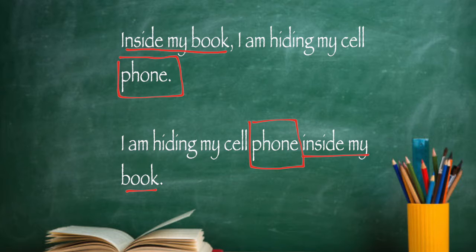A misplaced modifier is when you have a descriptive word or phrase, but it's not right next to what it should be. The modifier in this case is 'inside my book,' but it must be placed right next to the thing that it's describing. Because you said 'inside my book, I am,' it sounds like you're hiding in your book. It should be: I am hiding my cell phone inside my book. Because the cell phone is in your book, not you.